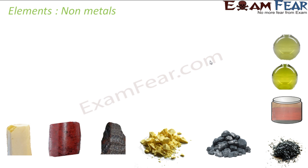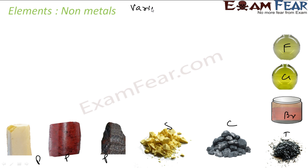Non-metals have a variety of colors. Phosphorus comes in three different colors; sulfur is yellow; carbon is black; iodine is dark; bromine is red; chlorine is a different shade. They range from yellow to red to black — they show a variety of colors.